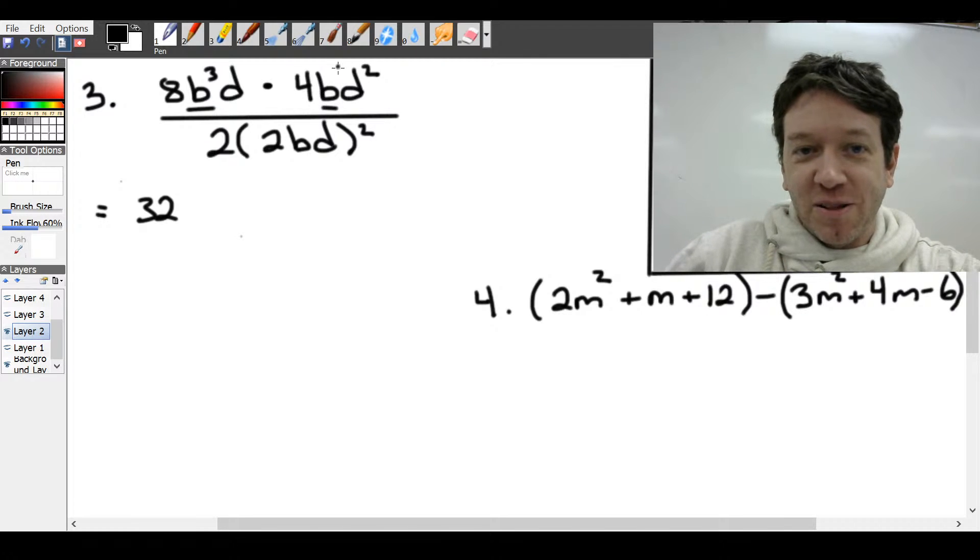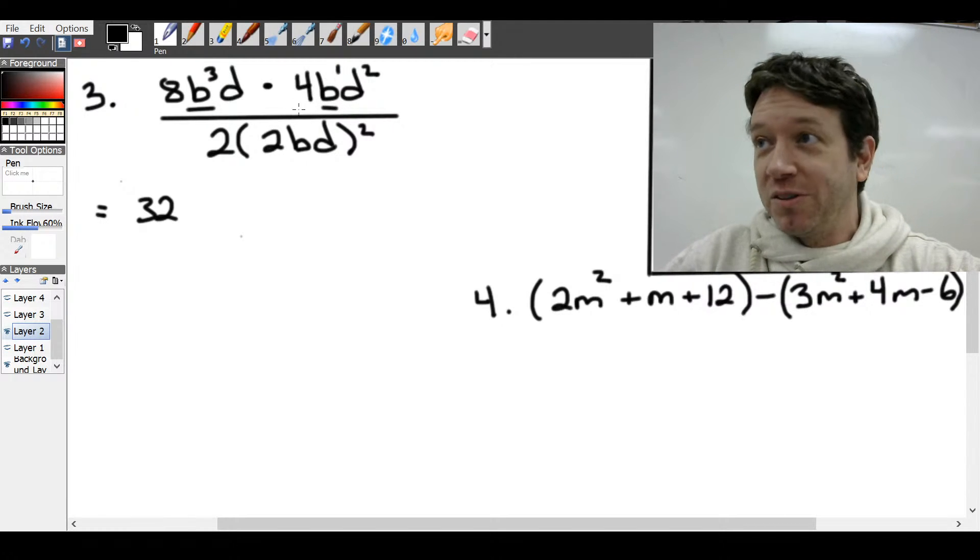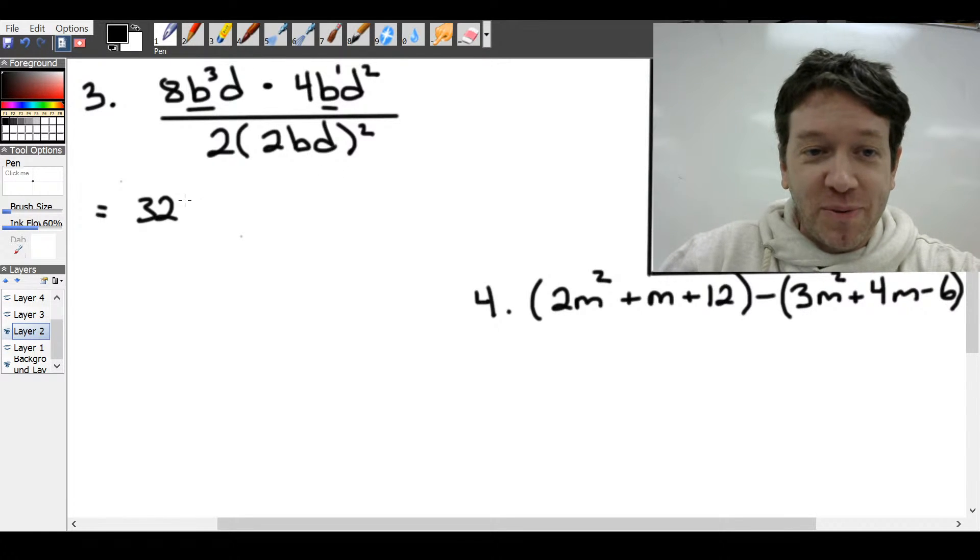Now, b by itself just means to the power of 1, but we usually don't write 1. So b cubed times b to the 1. When you're multiplying variables with the common base, you add the exponents. So 3 plus 1 would be 4. So b to the 4. Then we have d again to the power of 1 and d squared. Add those exponents. We get d cubed.